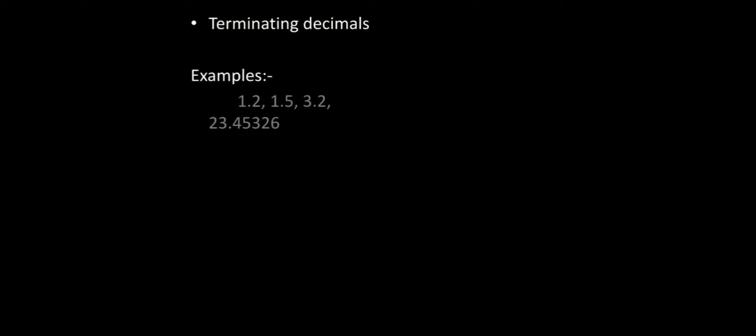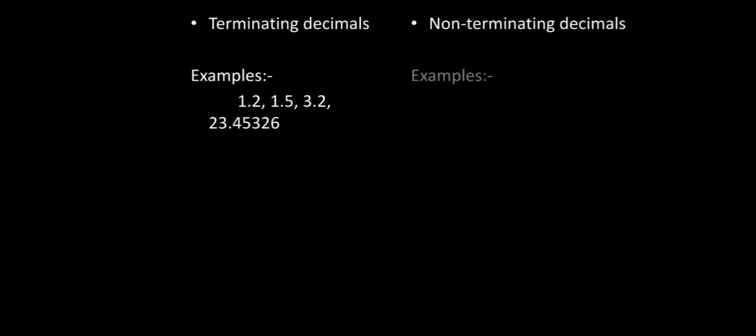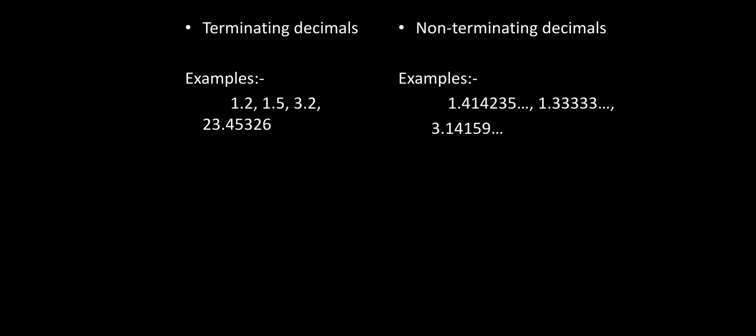Now, terminating decimals and non-terminating decimals. Terminating decimals are those decimals which terminate — meaning they stop; the decimal does not continue to infinity. Non-terminating decimals are decimals which continue to infinity and do not stop. For example, a terminating decimal is 1.2 — it stops.